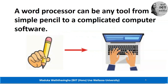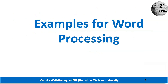Simply, if you want to write a letter, you can take a pen and paper and write using your hand, or you can take a computer, open a word processing software, and create your document. So it can be anything from a pencil to word processing software. Pencils and papers are also word processors, and on the computer there are word processing softwares too.